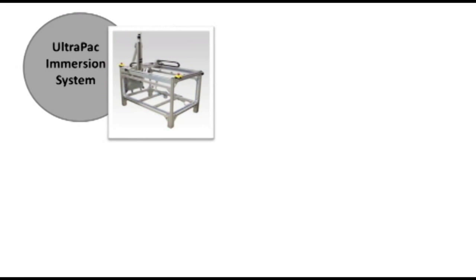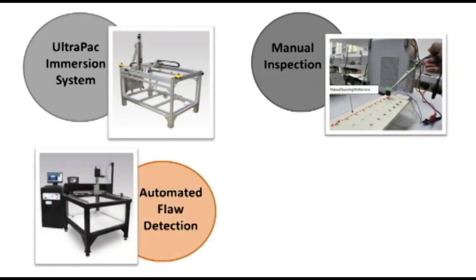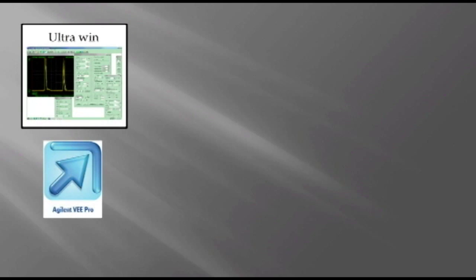For example, UltraPak immersion system produced by Mistras and supported by UltraWin software. Manual inspection from previous research was supported by Agile NDE. Automated flaw detection produced by Tessonics. LS25 series of industrial scanner produced by ScanMaster. For existing products supported by UltraWin and VPro software,